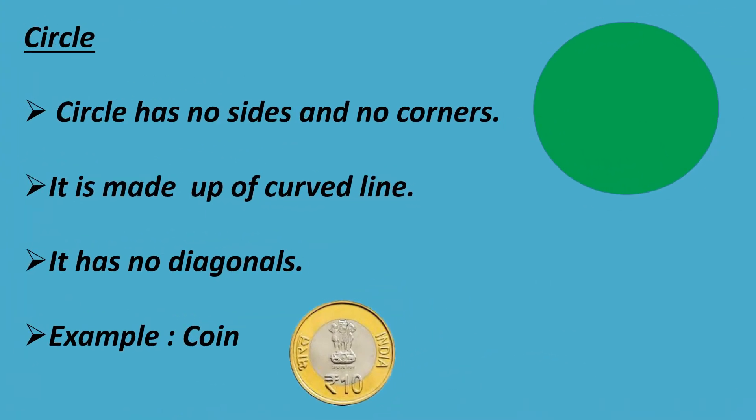Circle. Circle has no sides and no corners. It is made up of a curved line. It has no diagonals. Example: coin.